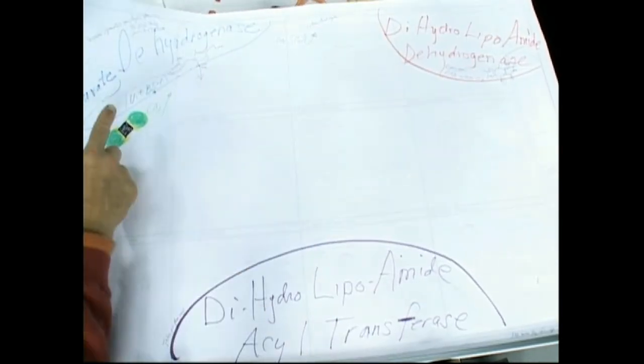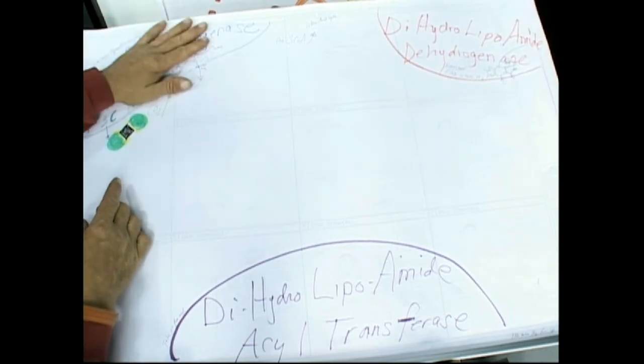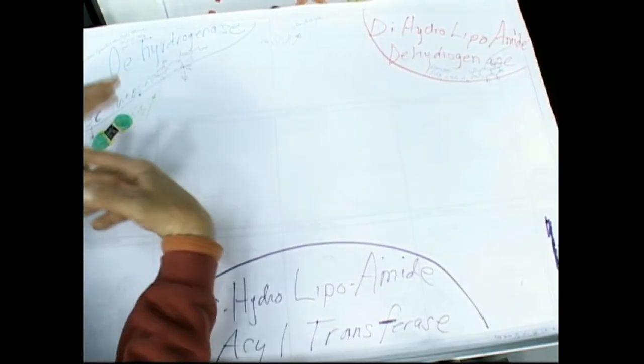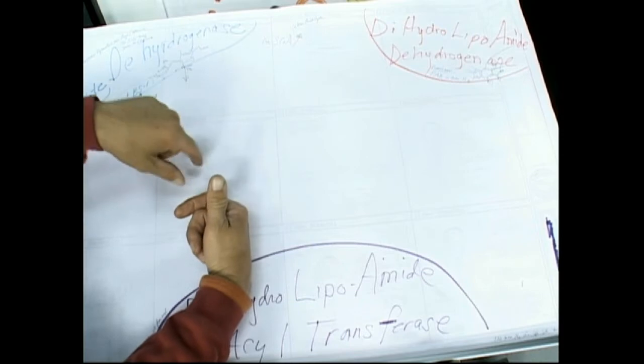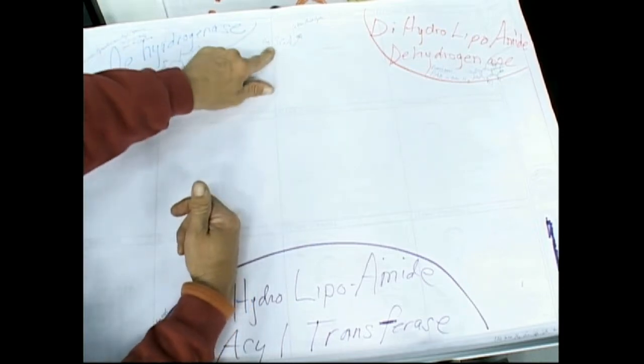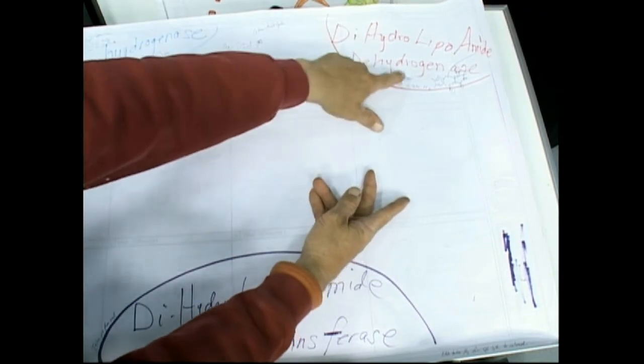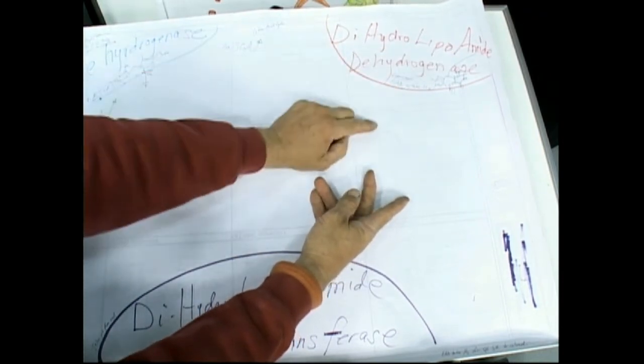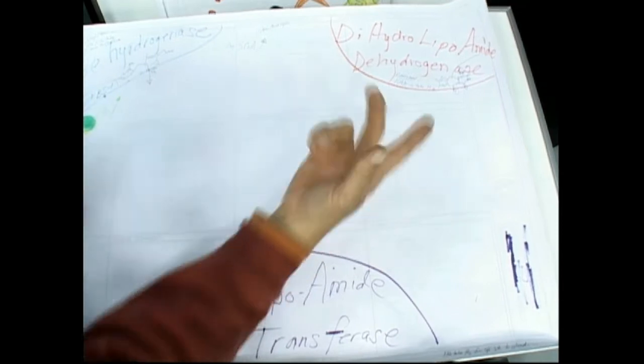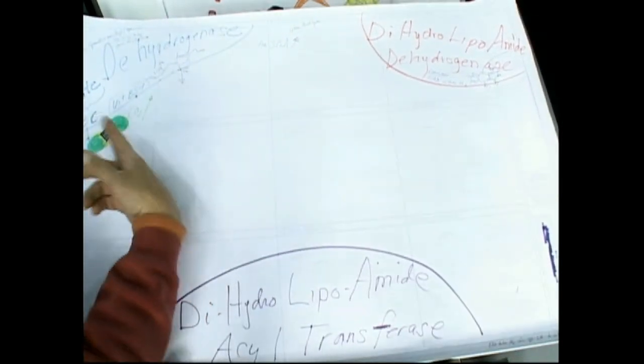And what it does, it'll take the acyl group from the pyruvate dehydrogenase enzyme, take it in by the sulfurs, then it'll give it to a sulfur of acetyl-CoA, then it'll go over and dihydrolipoamide dehydrogenase takes the H's off so that the arm can come back and do it again.